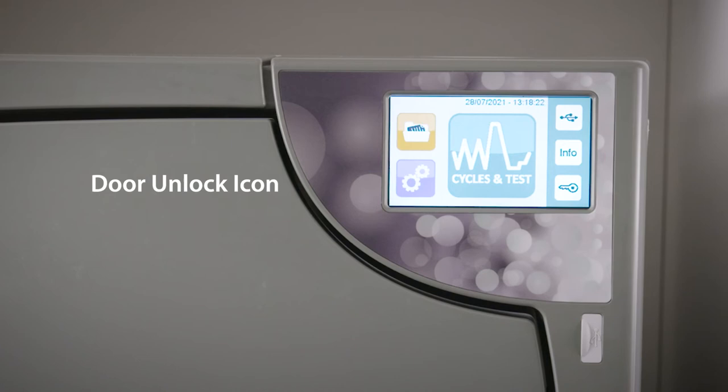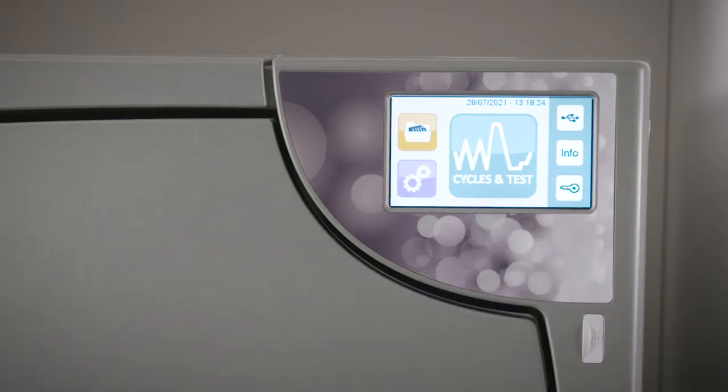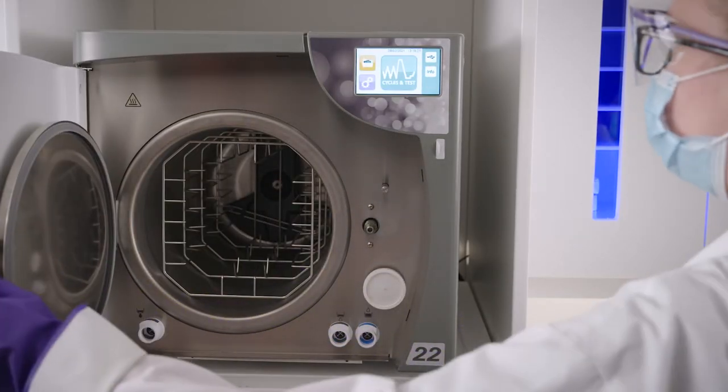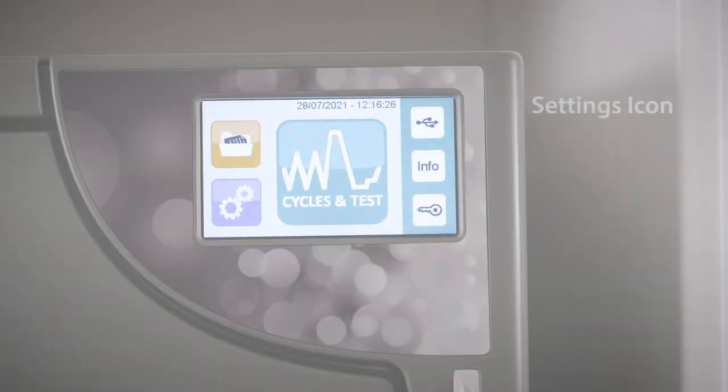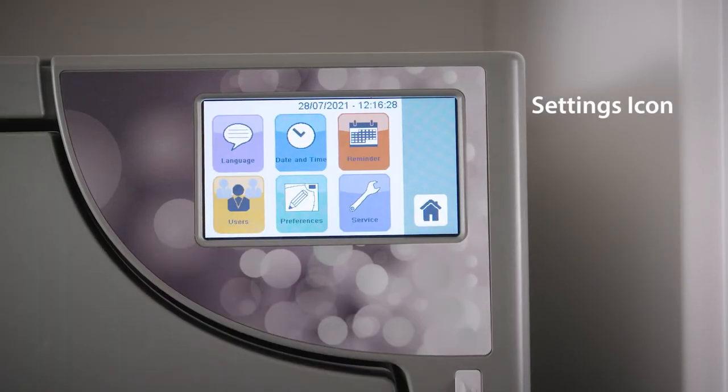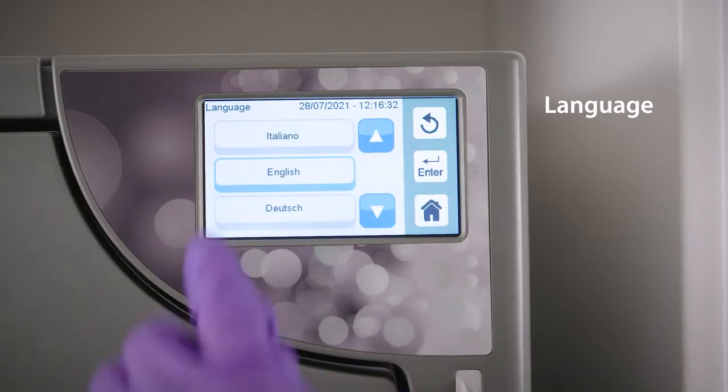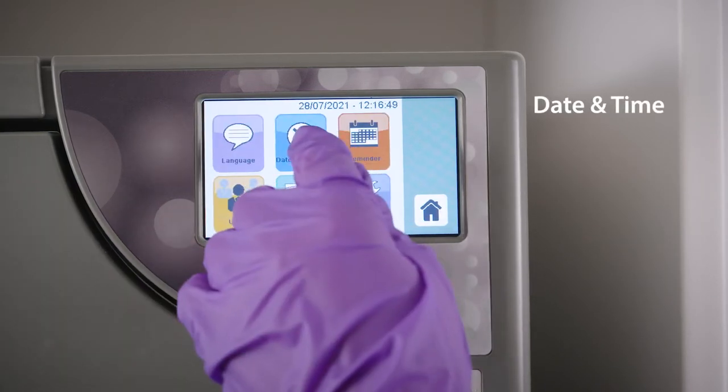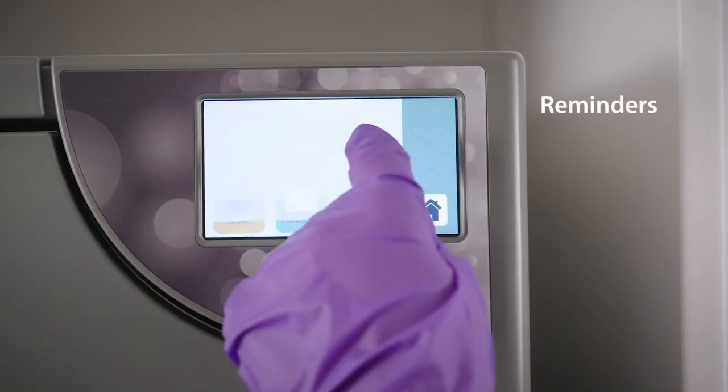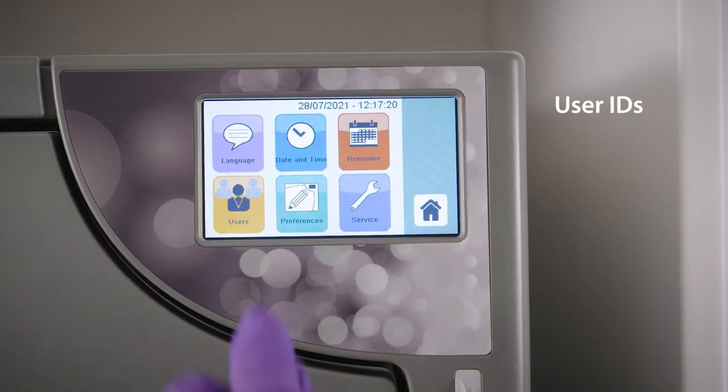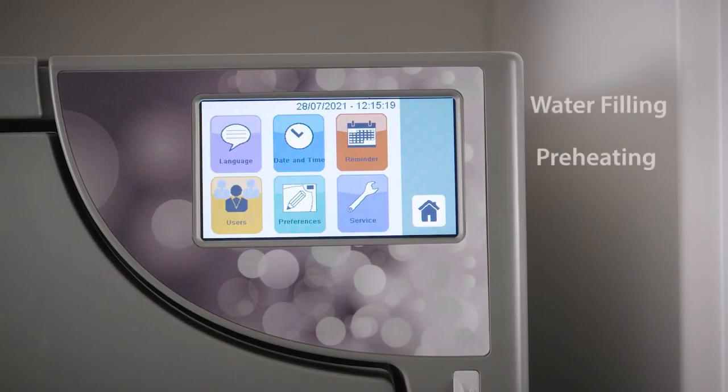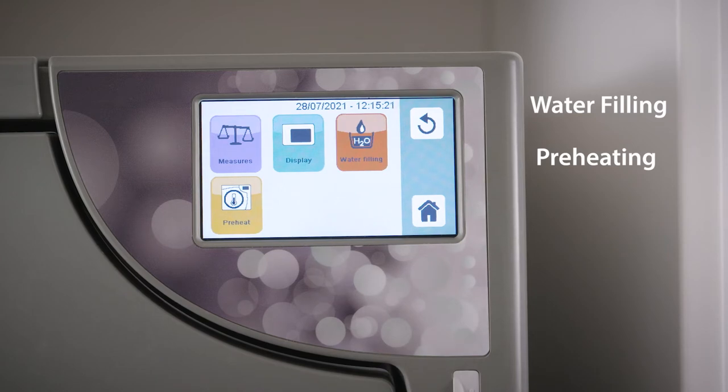The door unlock icon indicates if your door is locked or unlocked. Lastly, the settings icon allows you to adjust the user settings. Features such as language, date and time, automatic reminders, user IDs, water filling settings, and preheating options are explained in detail in your operator's manual.